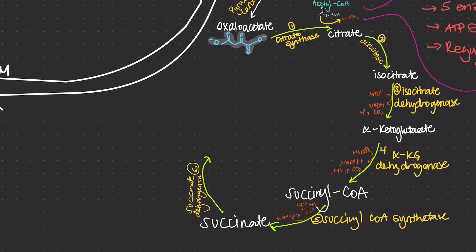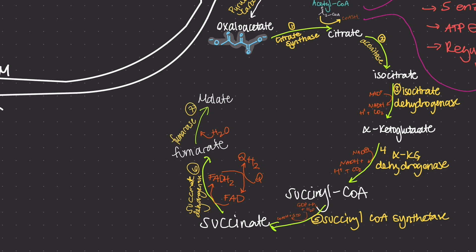This is facilitated by succinate dehydrogenase. Then, fumarate is hydrated to form malate, a reaction catalyzed by fumarase. Last but not least, malate is oxidized to regenerate oxaloacetate, reducing NAD+ to NADH. This is catalyzed by malate dehydrogenase.